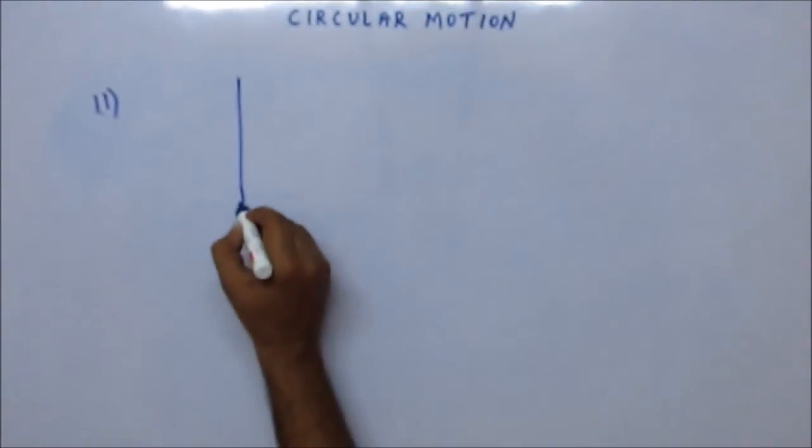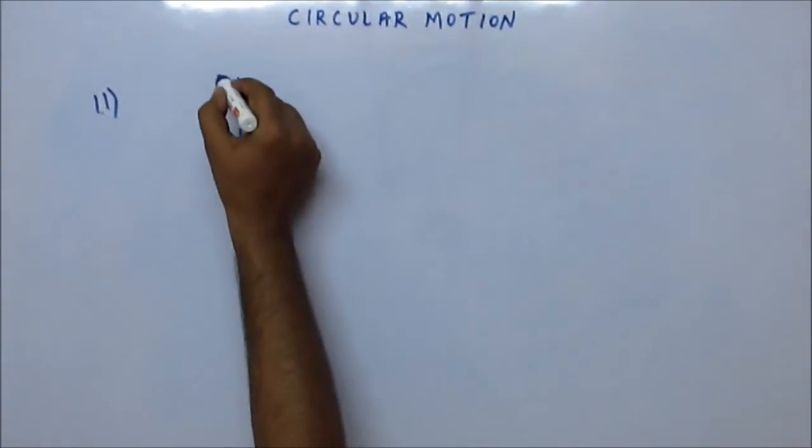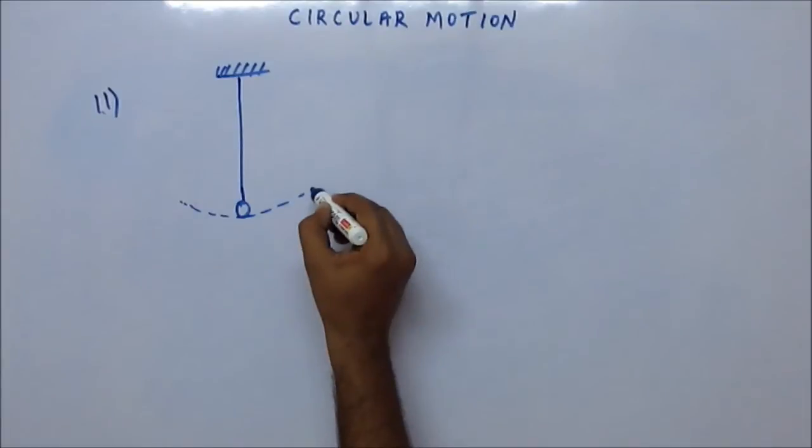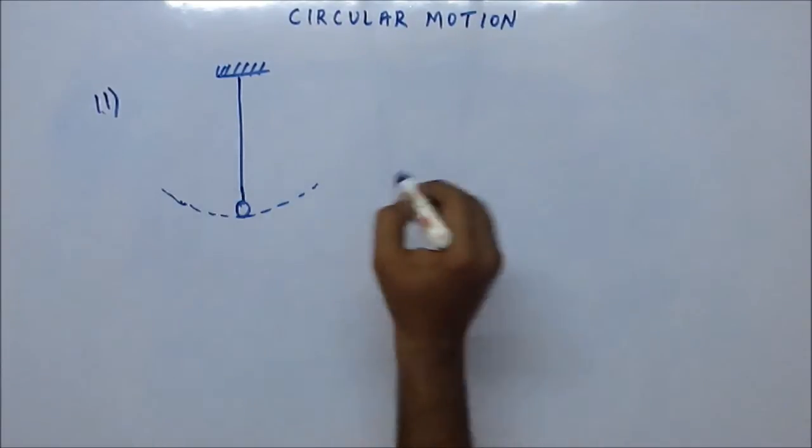Okay, now we are going to do a very interesting problem. This is a pendulum. You have a string and there is a bob at the end of the string. This is the path on which the bob can move.